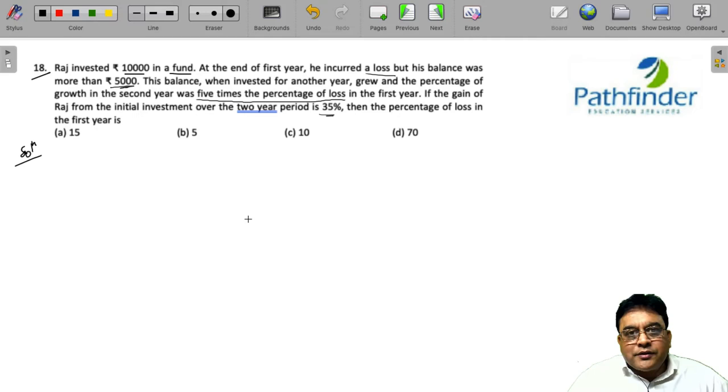So if there was a loss of x percent in the first year, there should have been a gain of 5x percent in the second year from the conditions of the question.